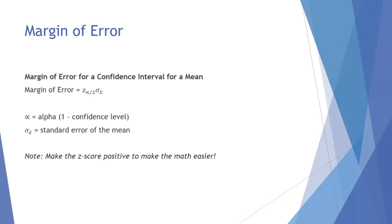Just a note here: make your Z score positive. Even if Excel kicks back a negative Z score at you, which it probably will, even if that happens, make it positive. Because that's going to make this math so much easier if we have a positive margin of error.